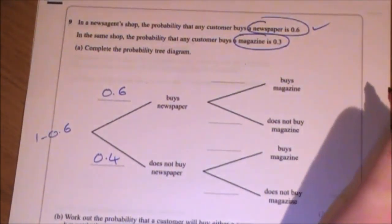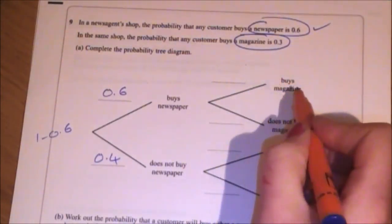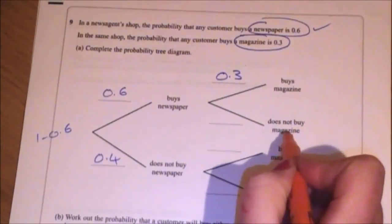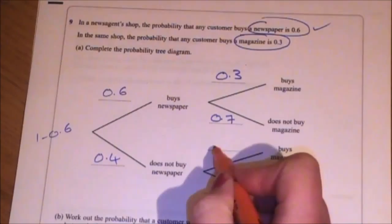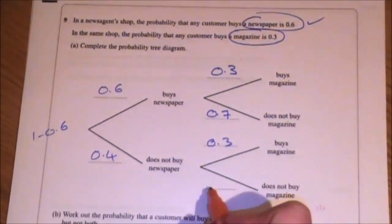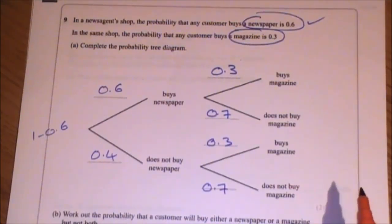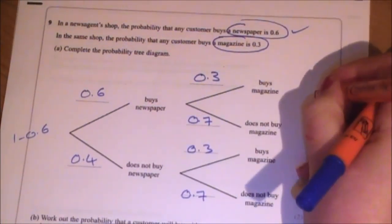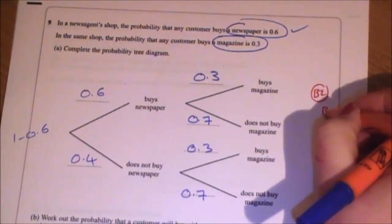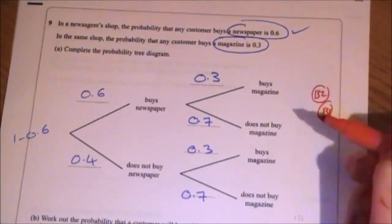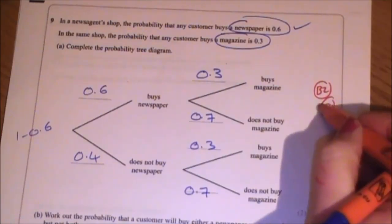Now I need to look at the magazines. The probability that they buy a magazine is 0.3. Buys a magazine, 0.3. Does not buy a magazine, 0.7. Buys a magazine, 0.3. Does not buy a magazine, 0.7. So for this, you get two marks if you got all six values correct. You would get only one mark if you got two or more correct. So if you only get one of them right, then that doesn't count.